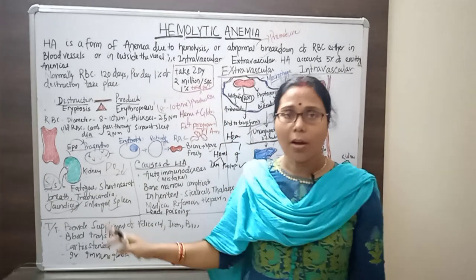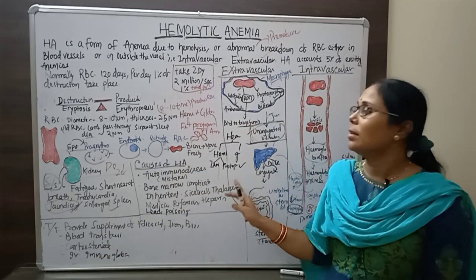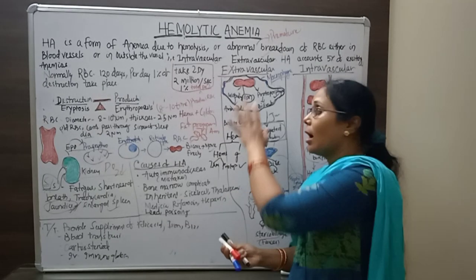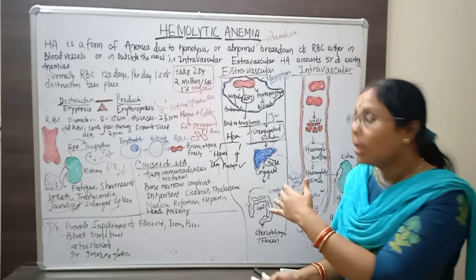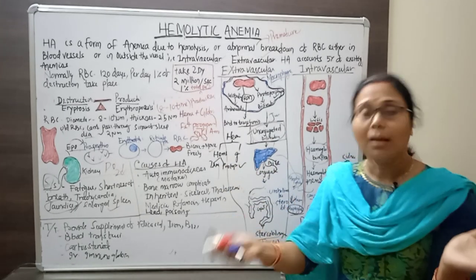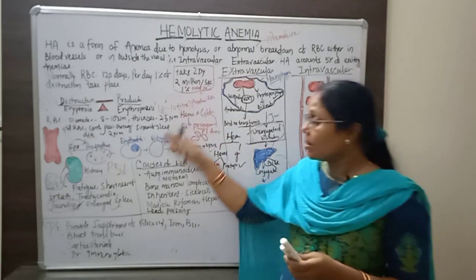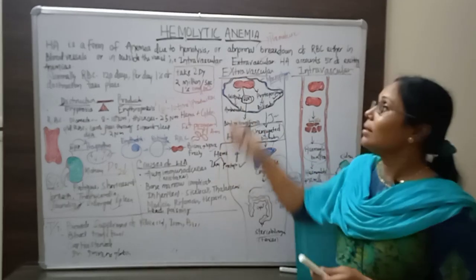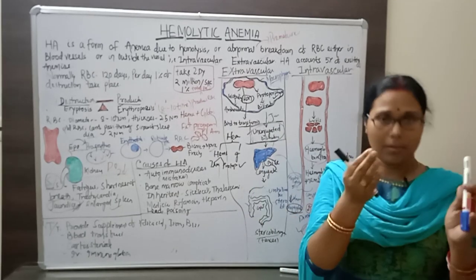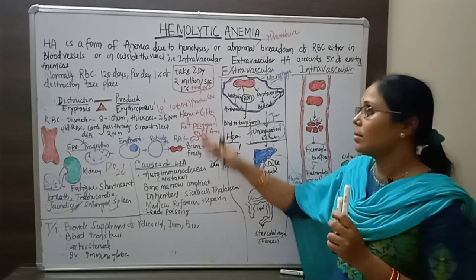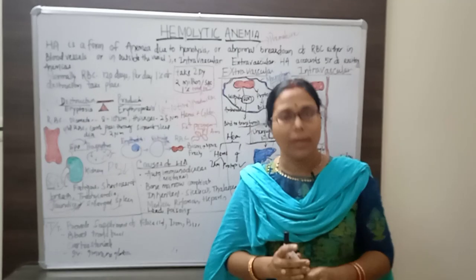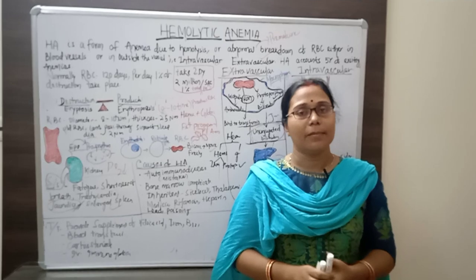In summary, hemolytic anemia occurs when the destruction of RBCs exceeds production. The body tries to maintain equilibrium between destruction and production, but when certain disease conditions cause premature breakdown of RBCs — before the normal 120-day lifespan — the resulting anemic condition is called hemolytic anemia.